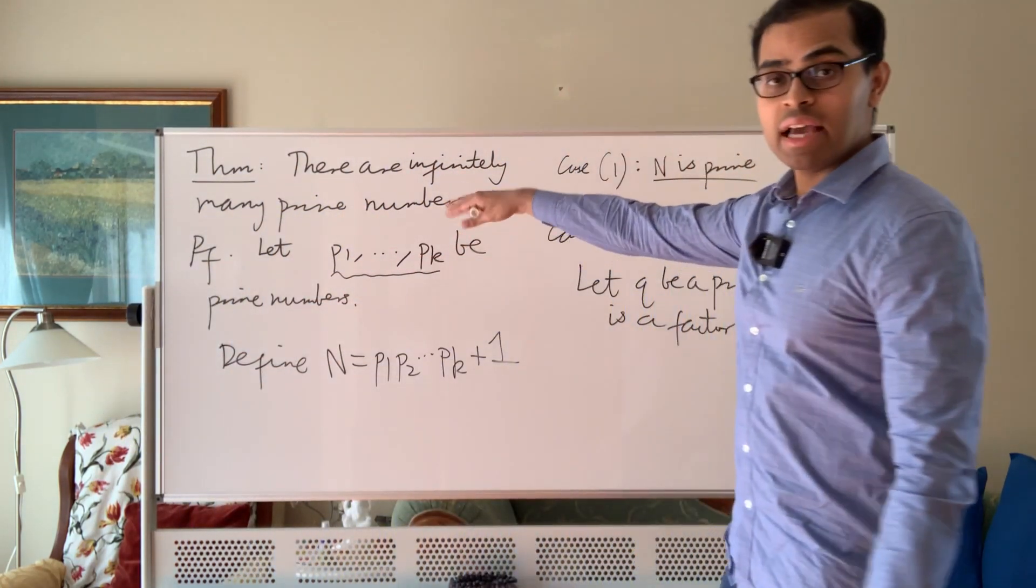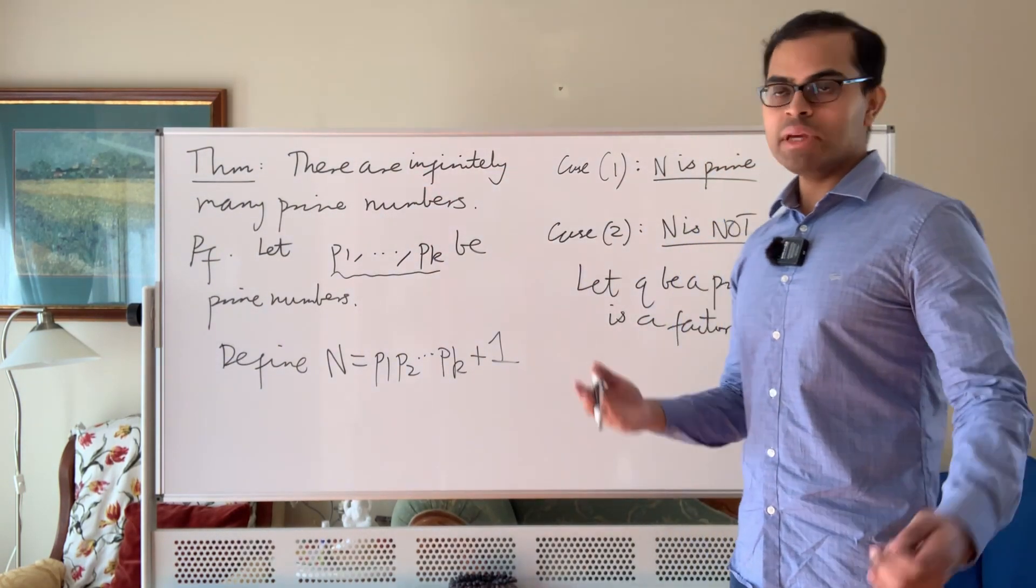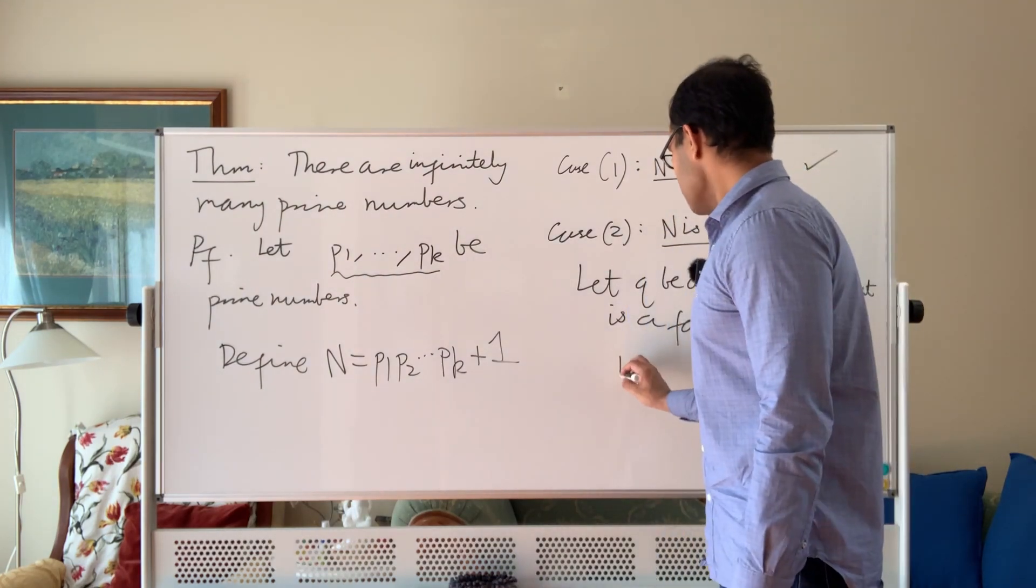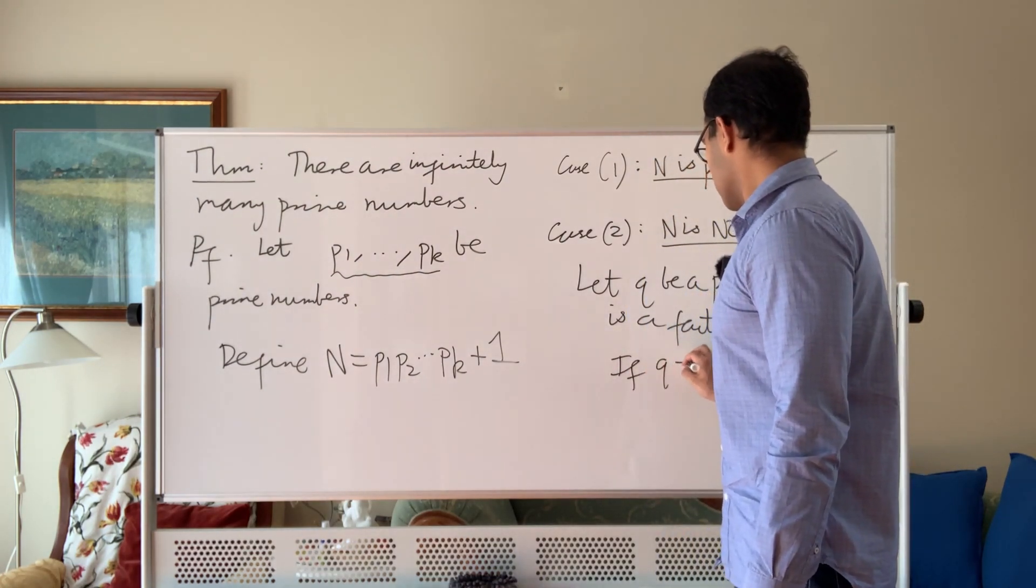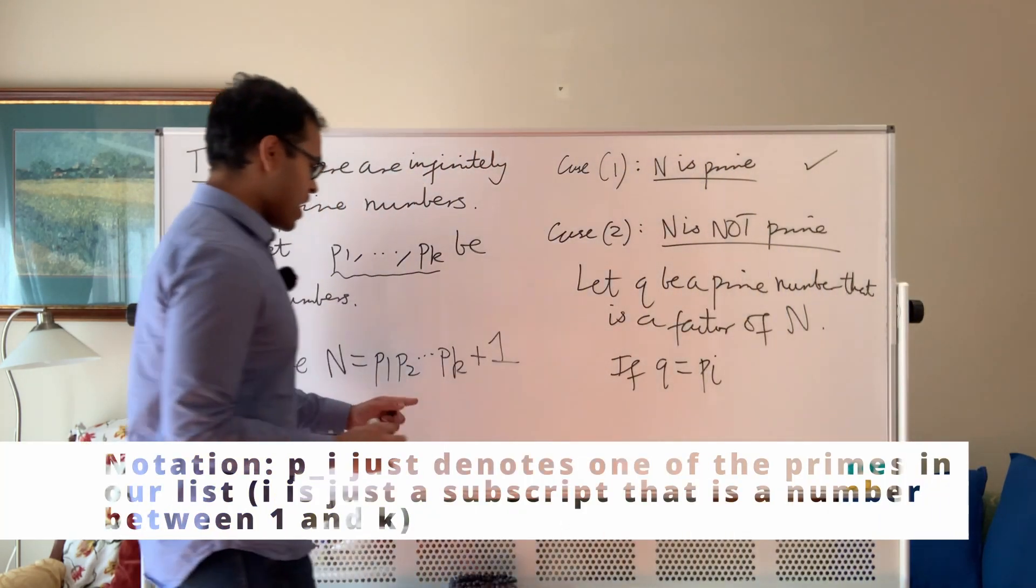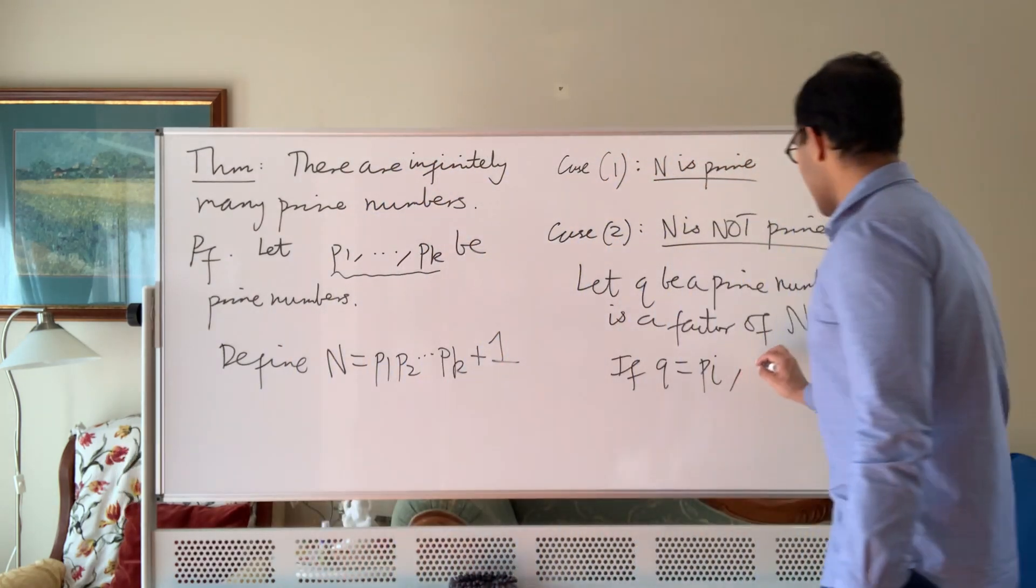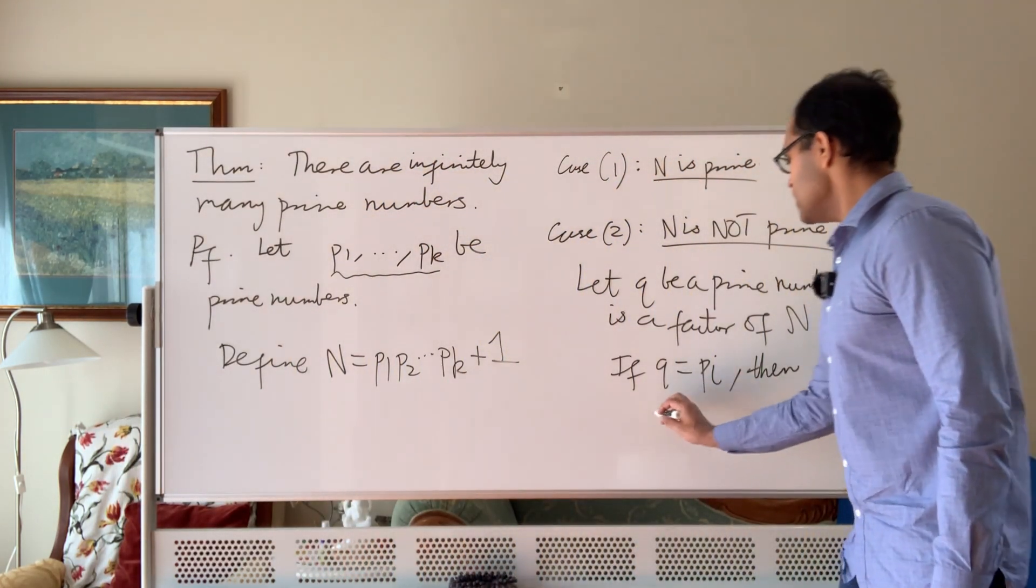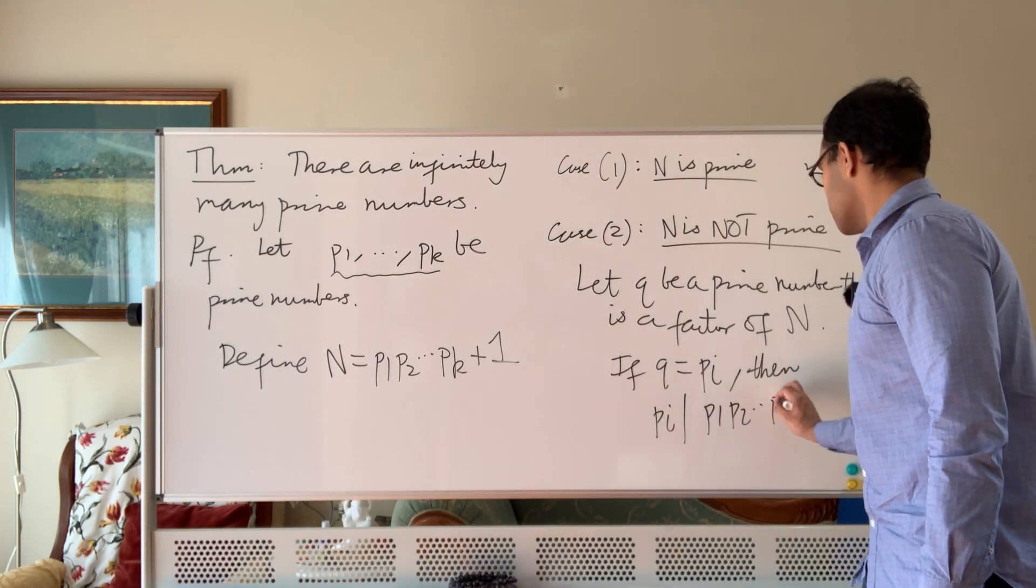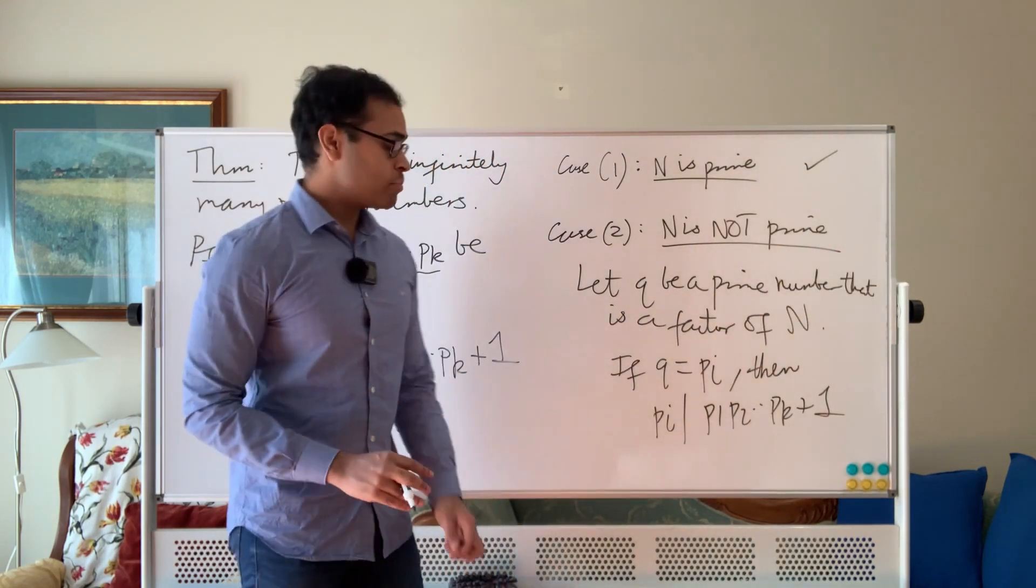Now the argument is q cannot be any of the Pi's. Q cannot be P1, P2, P3 up to Pk. Why can't it be? Well if q was Pi, if q was one of the primes, well each of the primes will divide the product. If q is Pi, then Pi will divide the product P1 P2 dot dot Pk plus 1. This symbol means divides—Pi is a factor of that product plus 1.